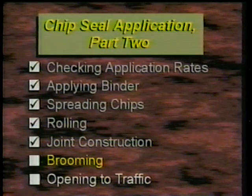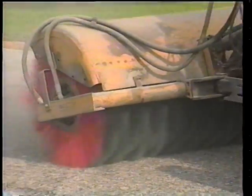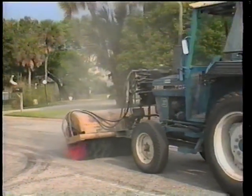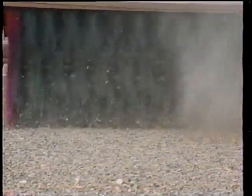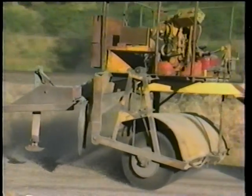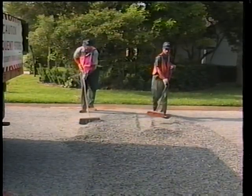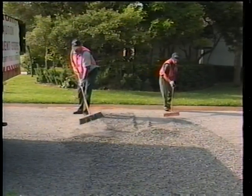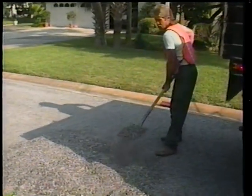Now let's look at brooming. While some amount of loose chips is unavoidable, they need to be removed by light brooming to prevent broken windshields and to keep them from dislodging the bonded chips. Be sure the brooming itself doesn't dislodge the aggregate — if it does, suspend it until a good bond has formed. Also make sure the broom is not applying excessive pressure. In rural areas, loose aggregate may be broomed to the shoulders; in urban areas, they should be broomed to the curb or center line and then removed manually or by vacuum device.